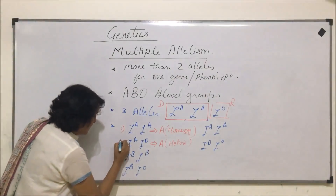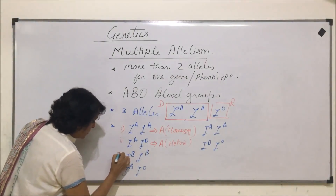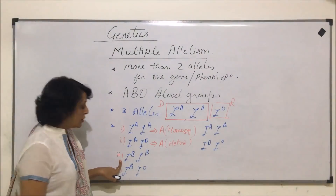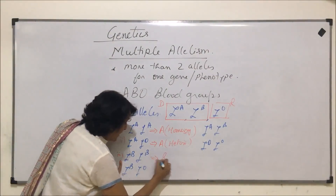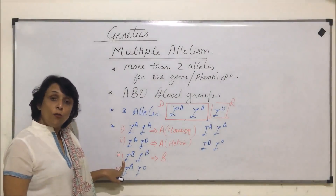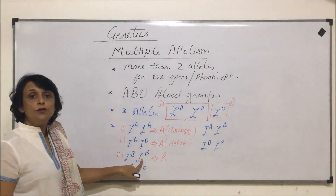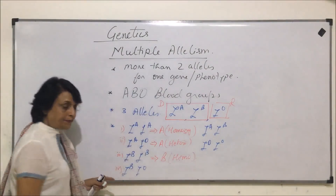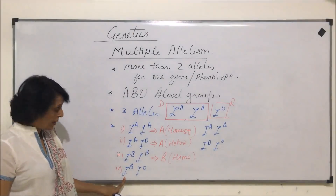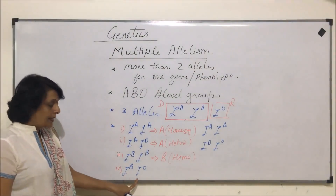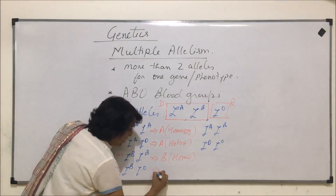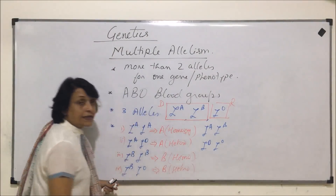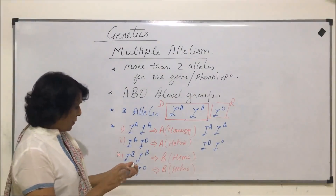In case 3, the individual's blood group will be B, but it is going to be homozygous B as both alleles are dominant — so this is homozygous. In the next situation, one allele is dominant and the other is recessive, so the blood group is going to be B but this time because of the heterozygous condition.